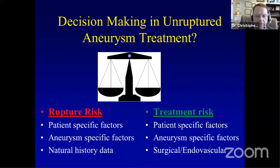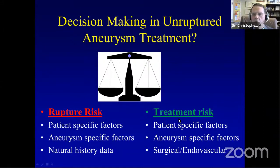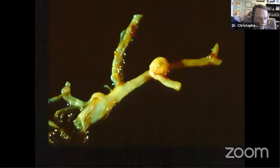This all comes from natural history data, none of which is perfect — all flawed for one reason or another. These are very difficult studies: following a large number of patients for a long interval to get rupture rates stratified by location, size, and other issues. On the other side of the decision tree is treatment-related risk — patient-specific factors such as age and medical comorbidities, and aneurysm-specific factors. And then whether we treat endovascularly or surgically.